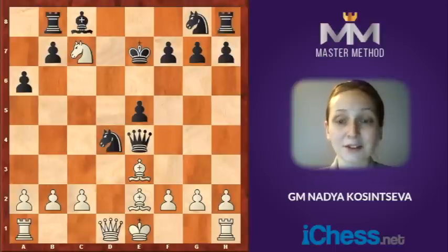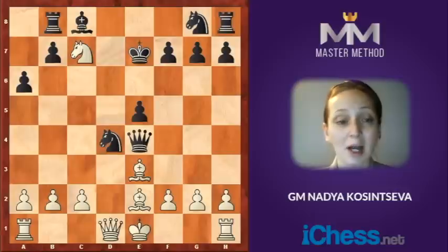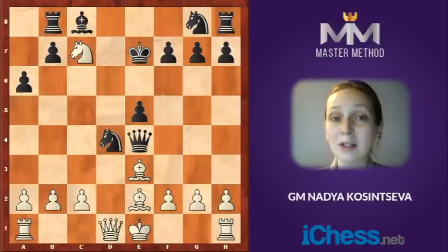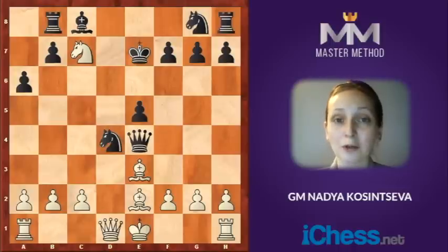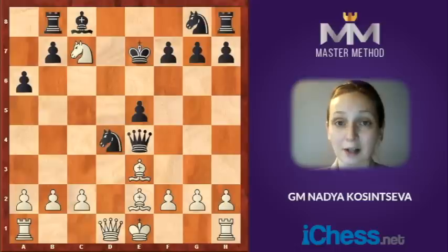Let's get started. As a first example, please take a look at the position on the diagram. White is to move — imagine it just happened in your game and your goal is to find the best continuation for white. The first thing I would do is make a list of candidate moves. It is very important to consider more than one option, and I always start my calculation with forcing lines.